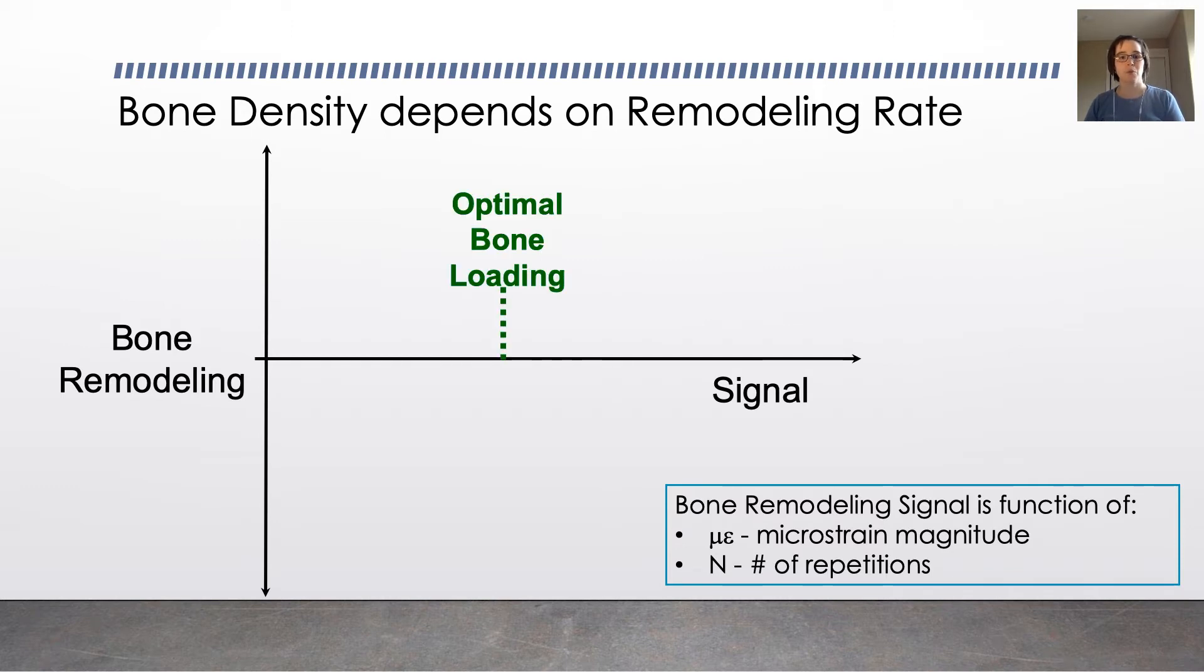There's an optimal bone loading zone for every person. And there's a range around that. It's called the equilibrium zone or homeostasis. It's the place where the bone volume and mass is stable.